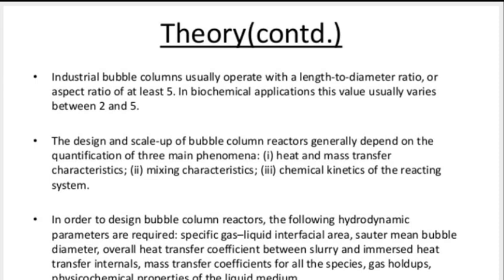Now we see the theory continued. Industrial bubble columns usually operate with a length-to-diameter ratio or aspect ratio of at least 5. In biochemical applications, this value usually varies between 2 and 5.